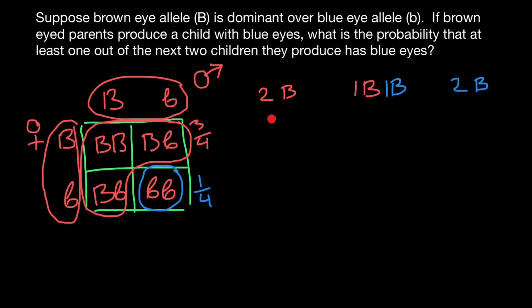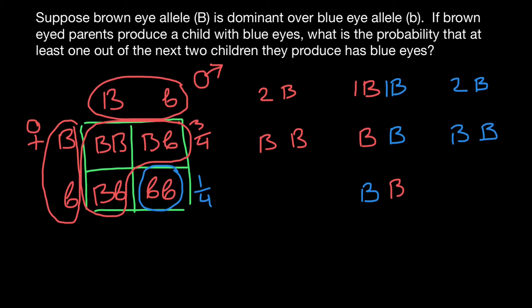In the category of two children with brown eyes, we have only one combination: the first child has brown eyes and the second child also has brown eyes. In the category of one child with brown eyes and one with blue eyes, we have two combinations: first child brown and second child blue, or first child blue and second child brown. For two children with blue eyes, there is only one combination: first child blue and second child blue.